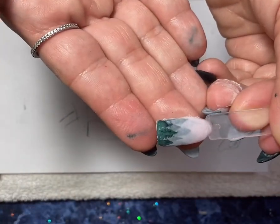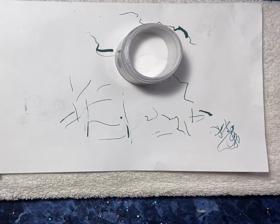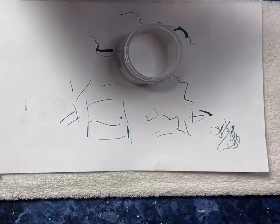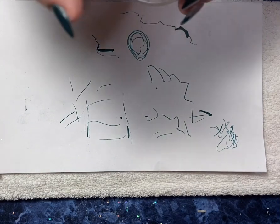After the final layer of trees is done, you're going to dip that in a clear dip and then we will activate really good around all the edges and then we can start to file.